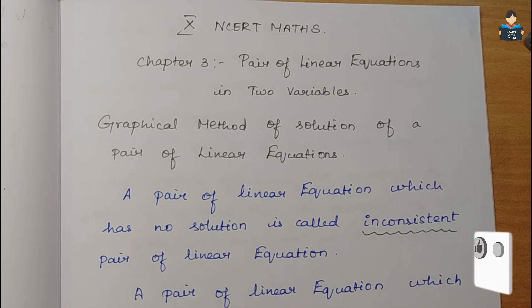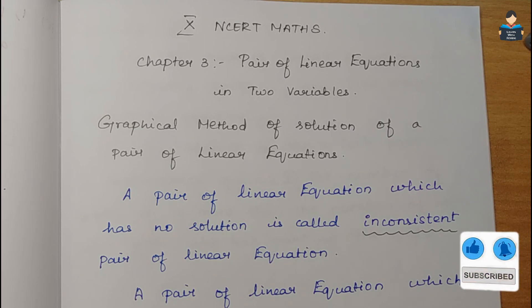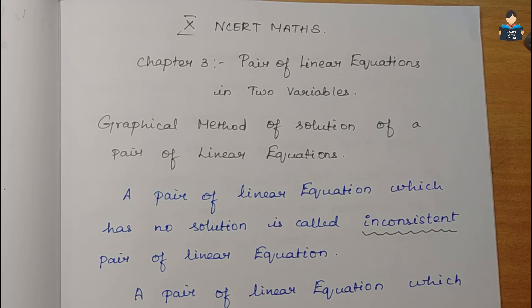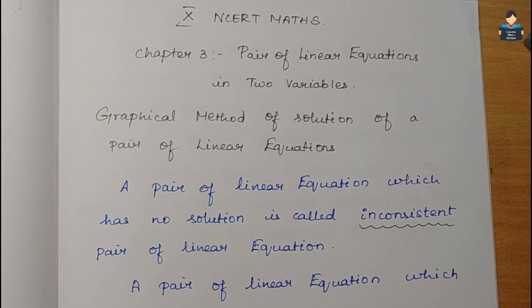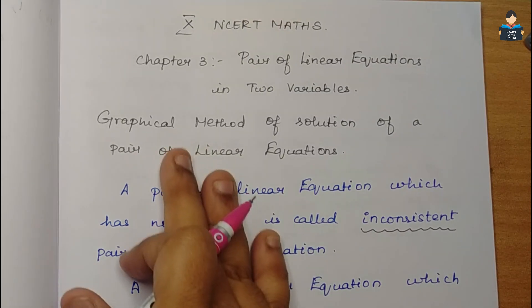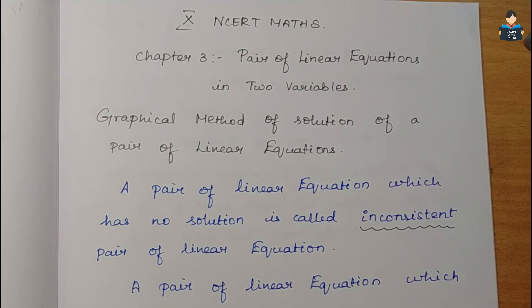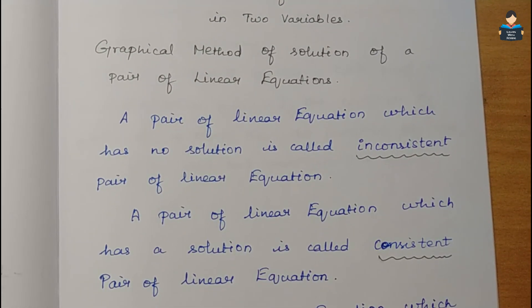For a given equation, one line represents one linear equation. When two such linear equations are given together, that is called a pair of linear equations in two variables - it uses two variables. The general form of the linear equation is used here.